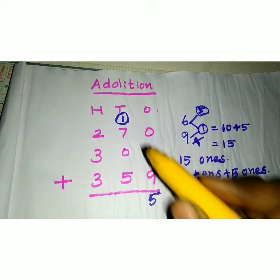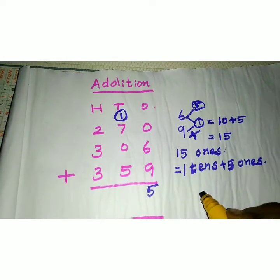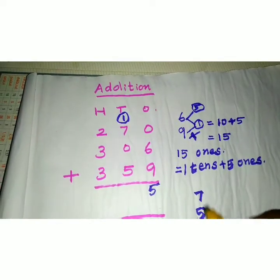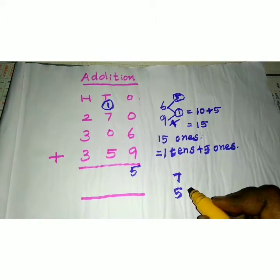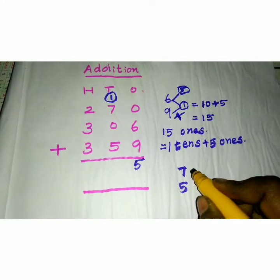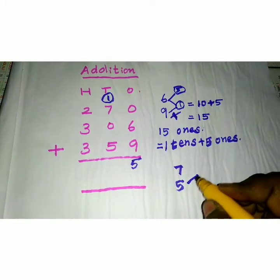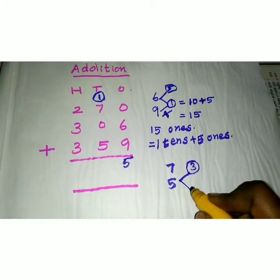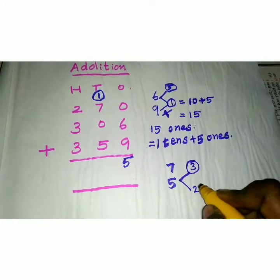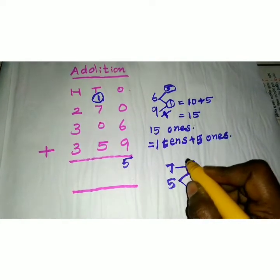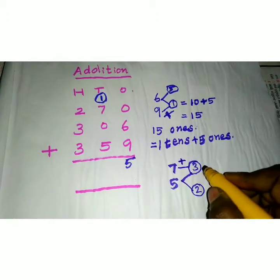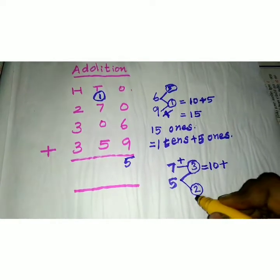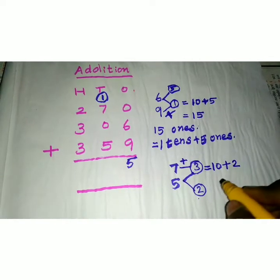Now add everything in the tens place: 1, 7, 0, 5. You have to add all 4 values. Before adding, consider 7 and 5 — since 0 means nothing, you don't need to add 0. Add 7 and 5. Which is bigger? 7 is bigger than 5. So you have to make 7 as 10 by taking away 3 from 5. 7 and 3 makes 10. If you take away 3 from 5, the remaining is 2. Now add 7 plus 3 — that makes 10. Then add the remaining value 2: 10 plus 2 makes 12.